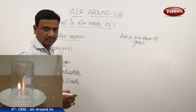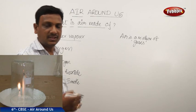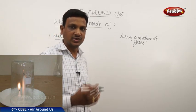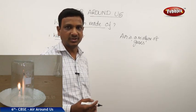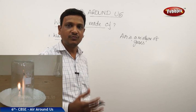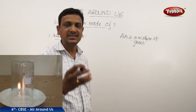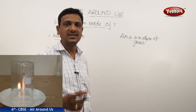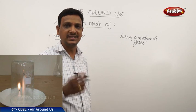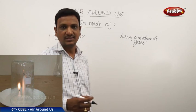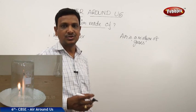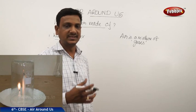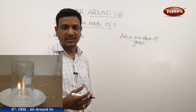Water vapor: in the previous lesson on water, we learned that water turns to water vapor by evaporation. The water vapor is present in the air and it decides the humidity of the air. The percentage of water vapor in the air is called humidity. Water present in the air in the form of water vapor decides the rainfall and other factors.